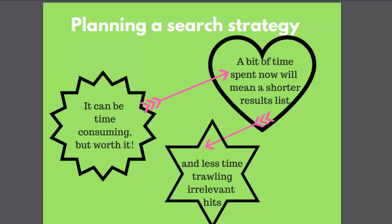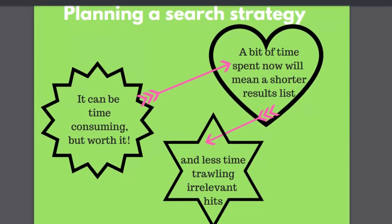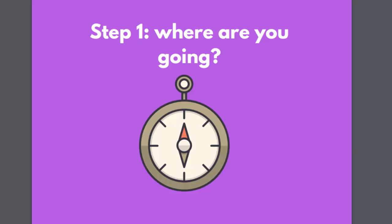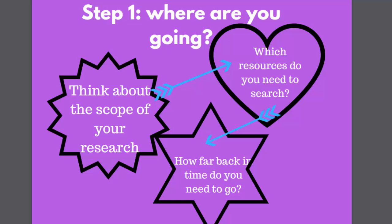Imagine you're going on a journey — what do you need to do to plan your trip well? Step one is to think about the scope of your research. How wide do you need to cast the net? Consider which databases, search engines and websites you need to search to find the right kind of information and how far back in time you need to go.